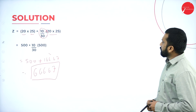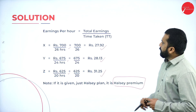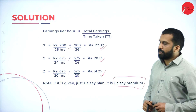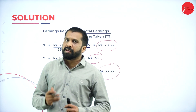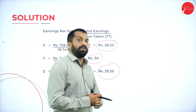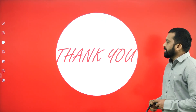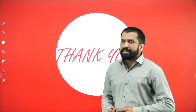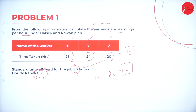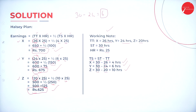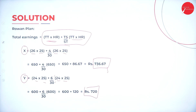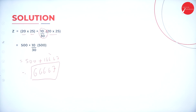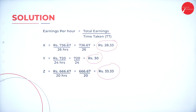Comparing the two plans: as per the Halsey Plan, X gets approximately 27.92 per hour, Y gets 28.13, and Z gets 31.25. As per Rowan Plan, X gets 28.33, Y gets 30, and Z gets 33.33. There will be a difference of around 1 rupee or so. Whoever prefers Halsey Plan can go for it; whoever wants Rowan Plan can choose that. The question also asked to calculate earning — these are the earnings per hour as per Rowan Plan.